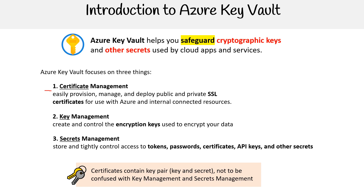Just understand that there are three isolated offerings that Azure Key Vault has. If this were another provider such as AWS, these would all be isolated services. But a common pattern with Azure is they like to group a bunch of functionality under a single service. So these things, which should be three services, are actually all under Azure Key Vault.